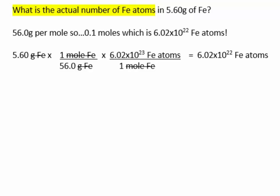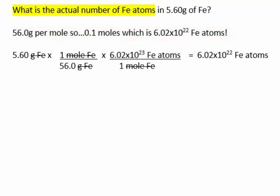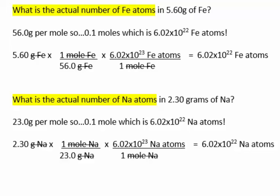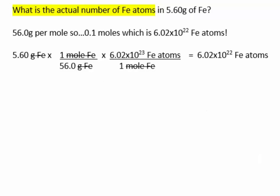What is the actual number of iron atoms in 5.6 grams of iron? 5.6 is one tenth of a mole, or one tenth of 56. The calculation would be 5.6 divided by 56, then multiplied by Avogadro's number, giving 6.02 times 10 to the 22nd — so we're one power of 10 less, or one order of magnitude. Similarly, if we were to have 2.3 grams of sodium, which is a tenth of a mole of sodium, 2.3 divided by 23 then multiplied by Avogadro's number gives the exact same number of atoms as we did with the iron.